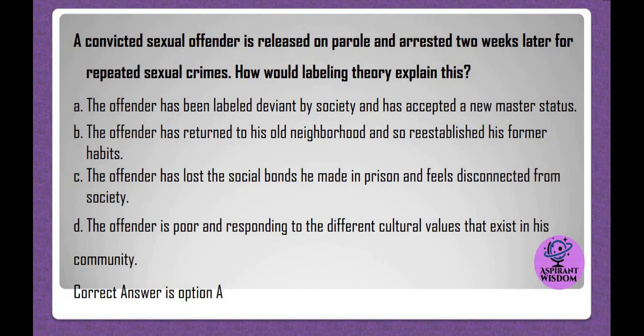A convicted sexual offender is released on parole and arrested two weeks later for repeated sexual crimes. How would labeling theory explain this? A. The offender has been labeled deviant by society and has accepted a new master status. B. The offender has returned to his old neighborhood and re-established his former habits. C. The offender has lost the social bonds he made in prison and feels disconnected from society. D. The offender is poor and responding to the different cultural values that exist in his community. Correct answer is option A.